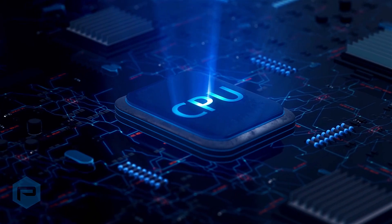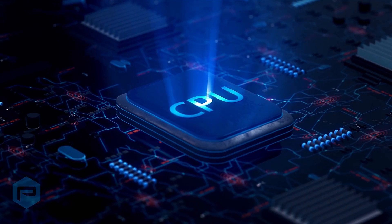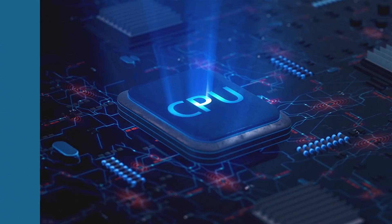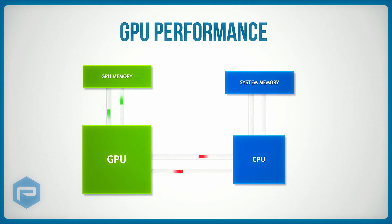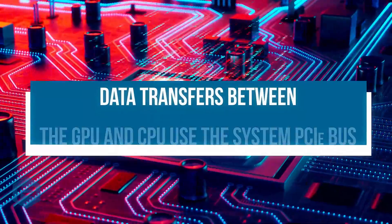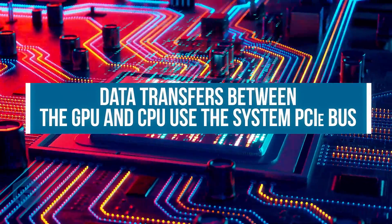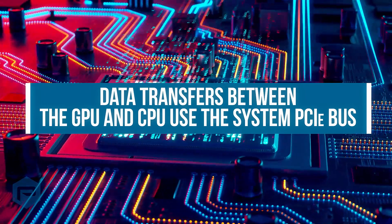If we run out of GPU memory, we must store data that can't fit into GPU memory into system memory. This means the GPU must send the data to the CPU, which then stores it into system memory. When the GPU needs the data again, it will have to request it from the CPU, which retrieves it from system memory and transfers it back to the GPU. The data connection between system memory and the CPU is quite a bit slower than the connection between the GPU and GPU memory, and data transfers between the GPU and CPU use the system PCIe bus, which is a slower connection.